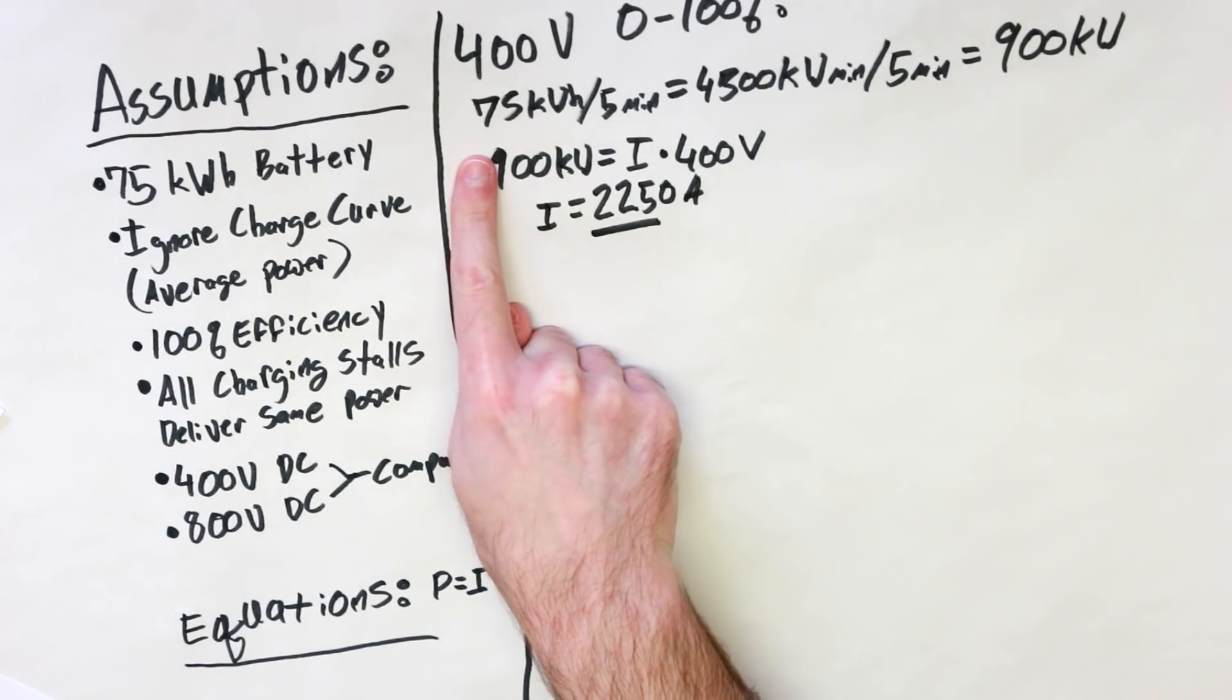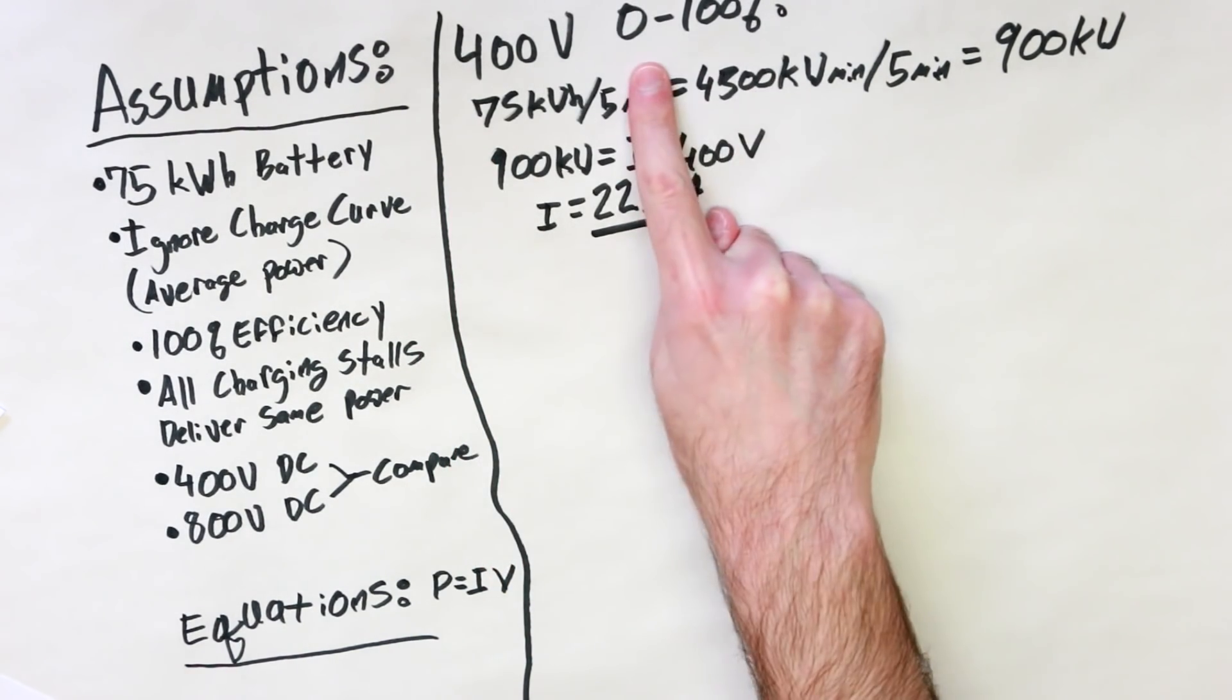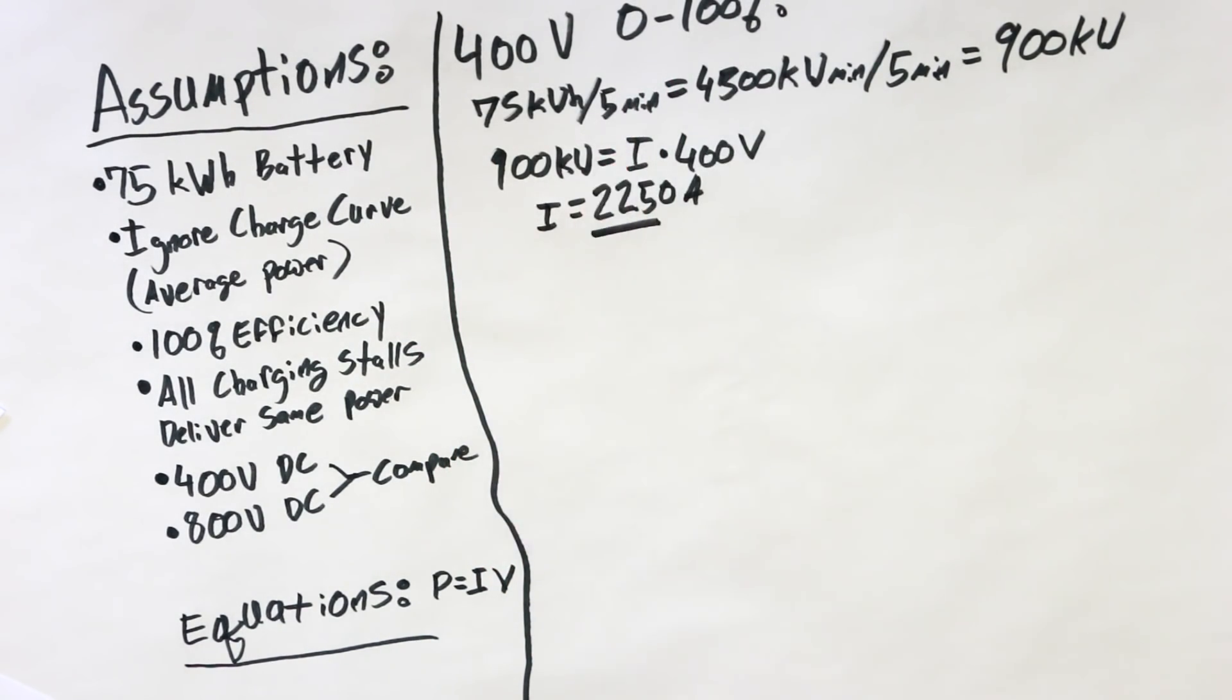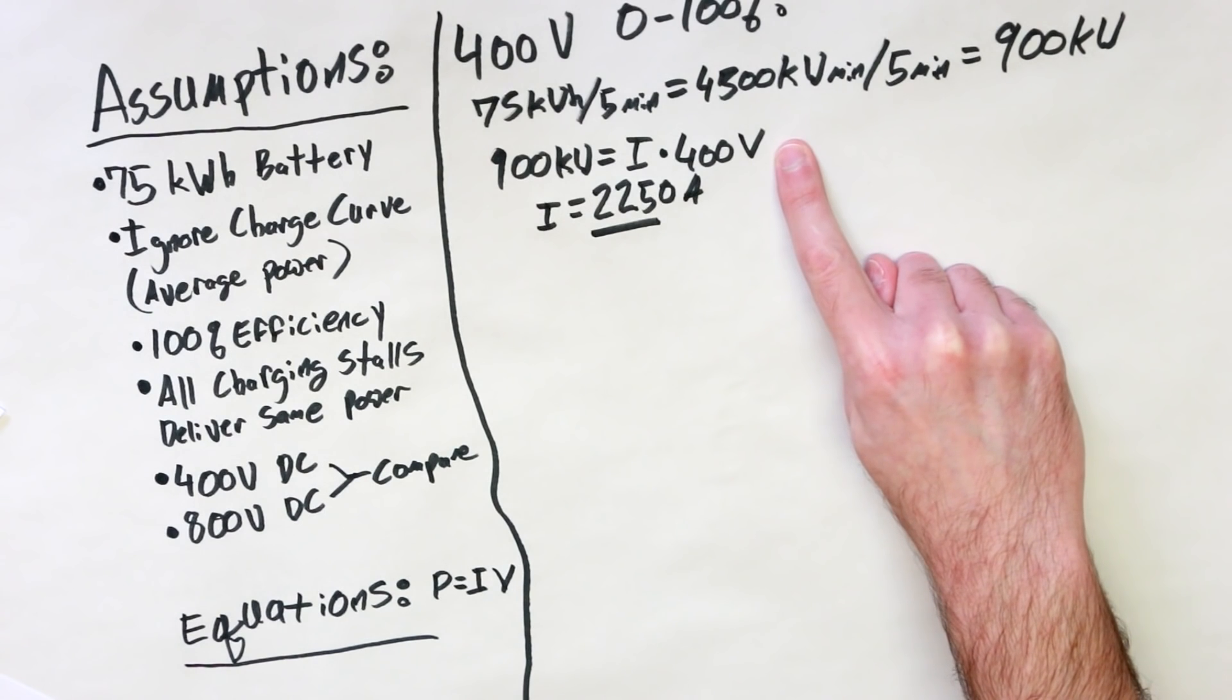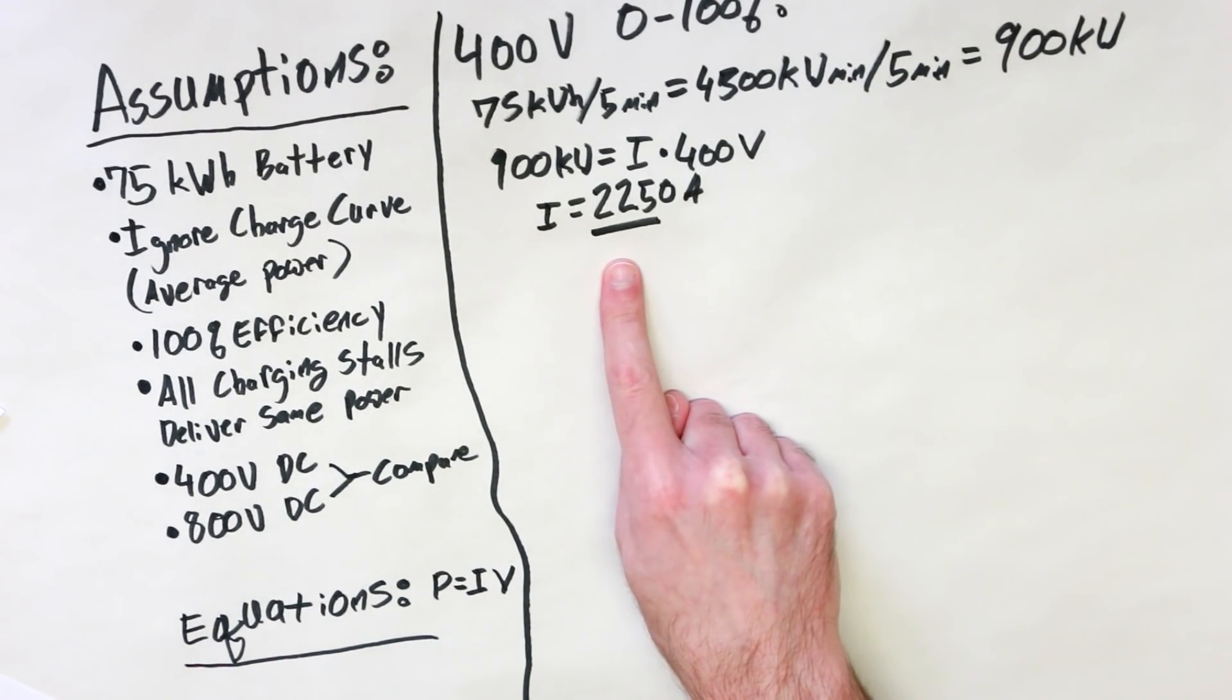So charging that 75 kilowatt hour electric vehicle from 0% to 100% in 5 minutes would require an average power of 900 kilowatts, which, at 400 volts DC, means 2,250 amps. Let that sink in for a second.